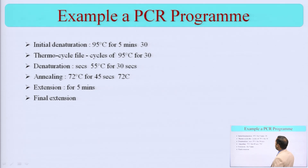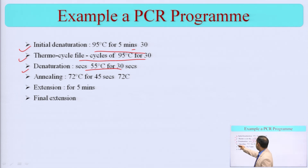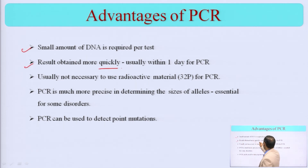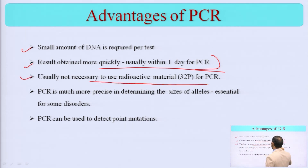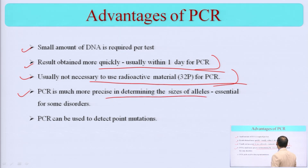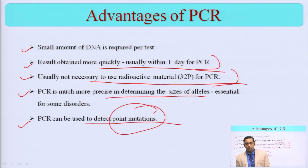Here is an example of a PCR program — the temperature and timing for initial denaturation, then the thermocycle phase with denaturation, inhalation, extension, and final extension. What are the advantages? A small amount of DNA is actually required, results are very quick — usually in one day. It is usually not necessary to use radioactive material. PCR is much more precise in determining the size of alleles, and PCR can be used for the detection of point mutations. If a single point mutation is happening, that can also be identified.